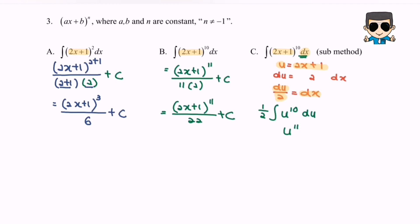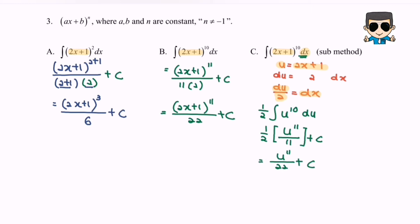We get u to the power of 11 over 11 plus C. Do remember we have to multiply with 1 over 2, so finally we have u to the power of 11 over 22 plus C. Remember that u is equal to 2x plus 1, so finally the answer is 2x plus 1 to the power of 11 over 22 plus C.